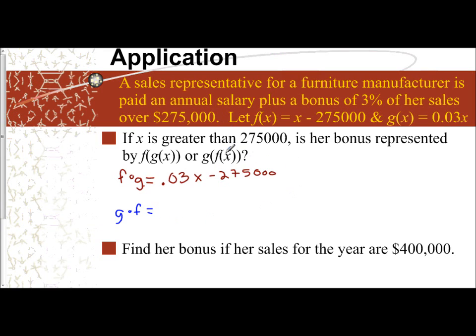Which means I plug in f(x) for my variable in g. And so I have 0.03x, but instead of x, I'm going to put my parentheses, x minus $275,000.